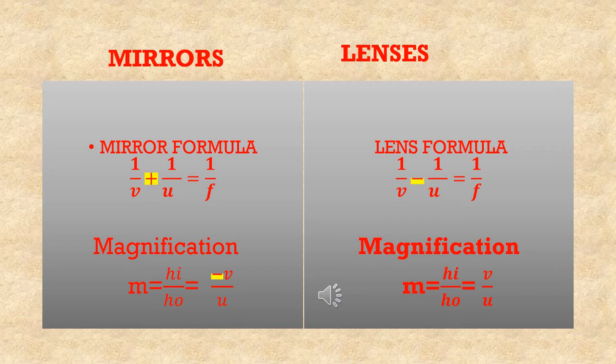That is equal to −V/U. Remember, this negative sign comes in the magnification formula for mirrors. For lenses, HI/HO = V/U when we apply the sign convention. The lens formula is 1/V − 1/U = 1/F — note the negative sign. Similarly, magnification for lenses is HI/HO = V/U, same as mirrors but without the negative sign in the magnification.